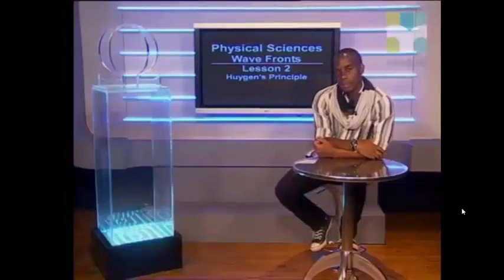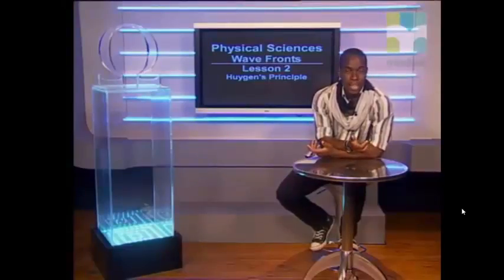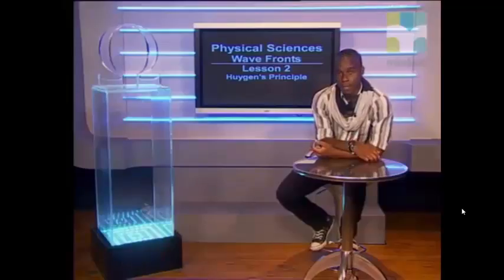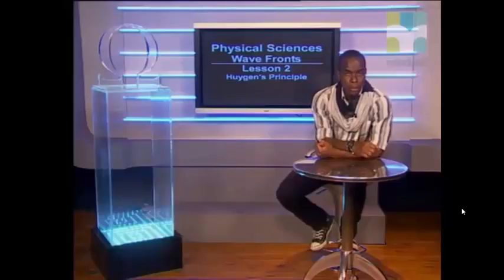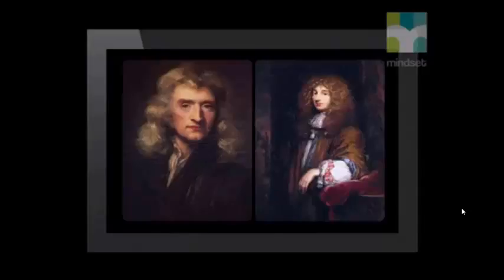Hello grade 11's. We know that in the 17th century scientists had 2 main theories of light. These were their ideas about what light really is and how it travels. Newton believed that light travels as a stream of particles and Huygens thought that light travels as a wave.